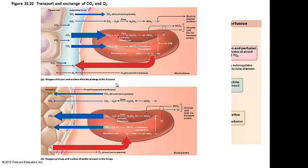Now we're in the lungs. Again, chemistry is involved along with partial pressure and concentration. Oxygen pick up — why does oxygen go from the alveoli into the plasma? Because of partial pressure differences. Oxygen comes in and dissolves in the plasma. When I add oxygen to this reaction, I'm going to kick carbon dioxide off the hemoglobin seat.